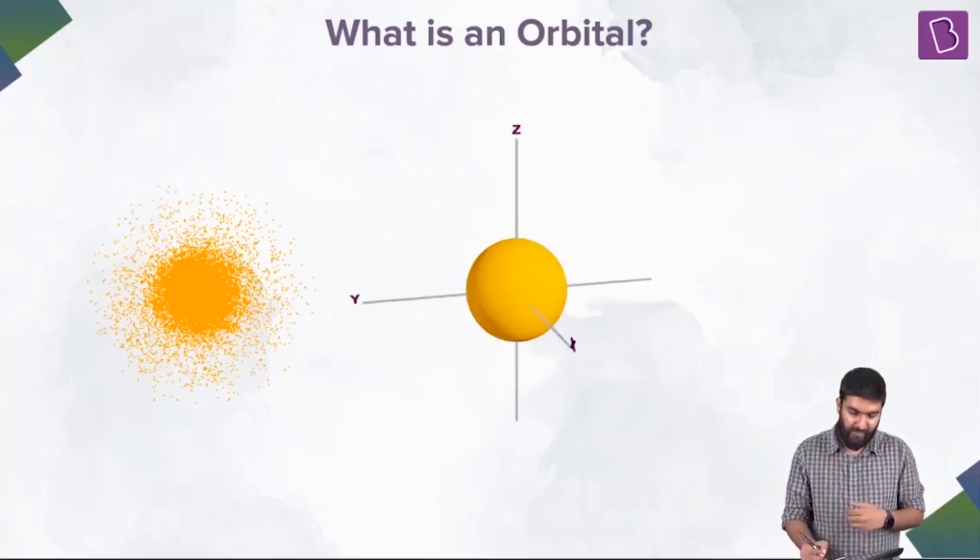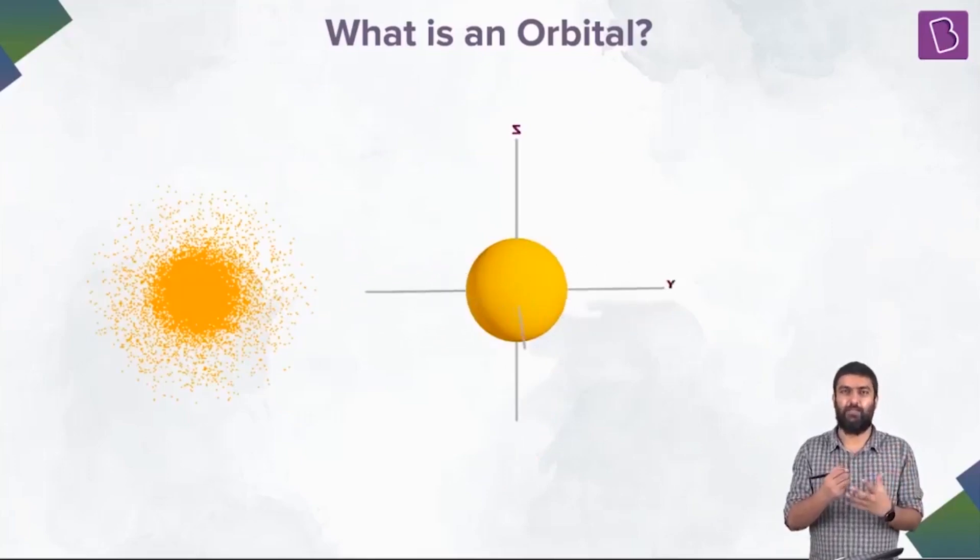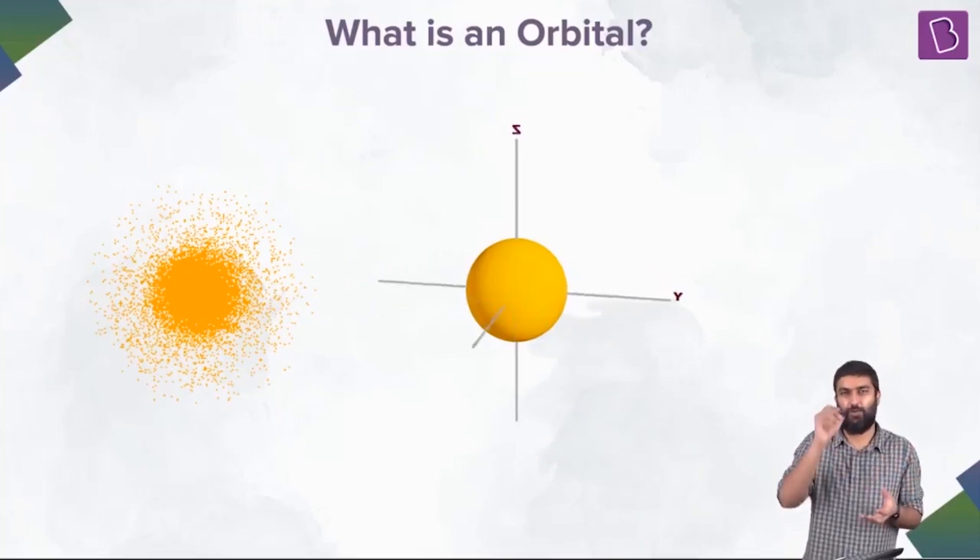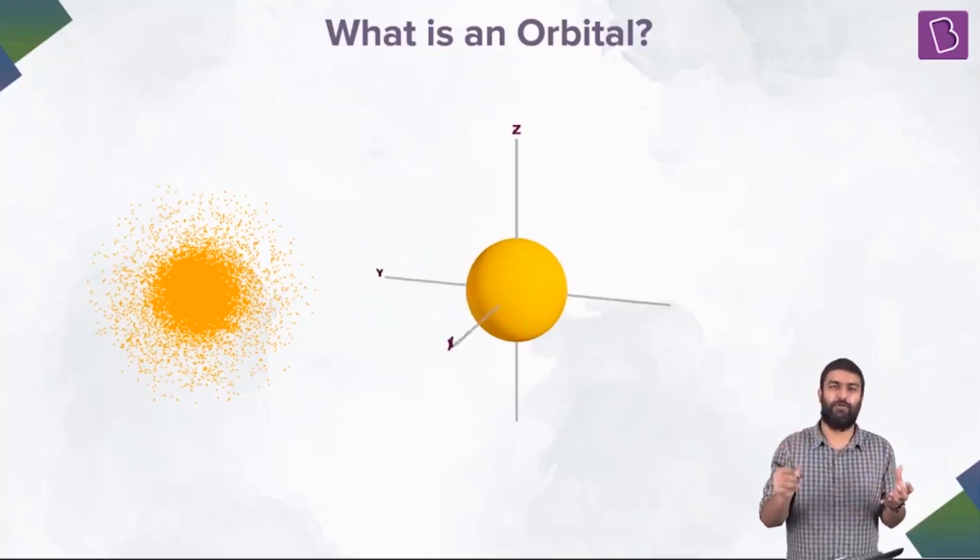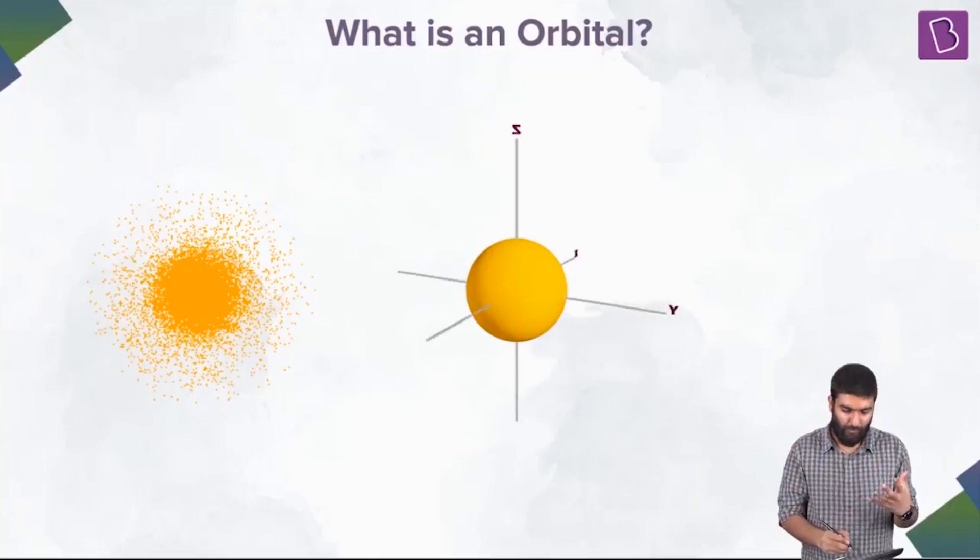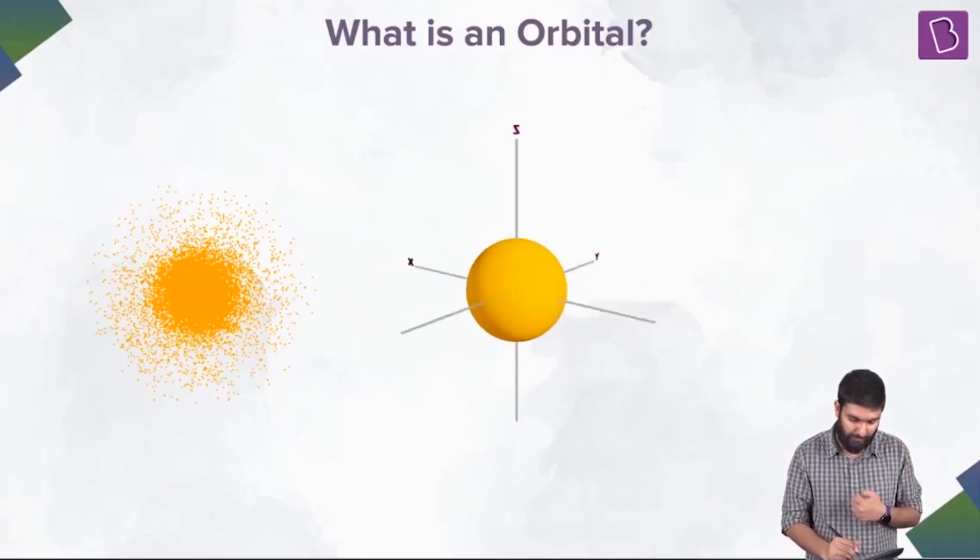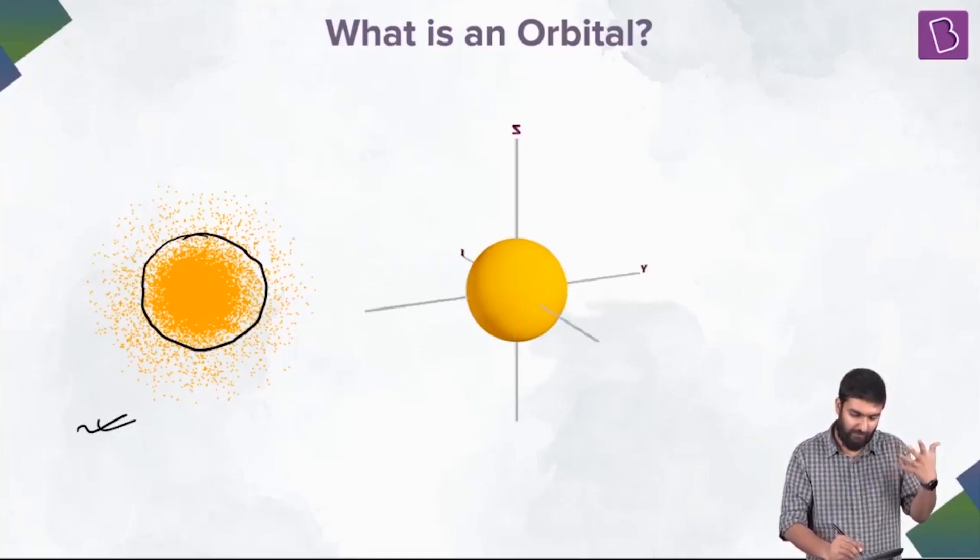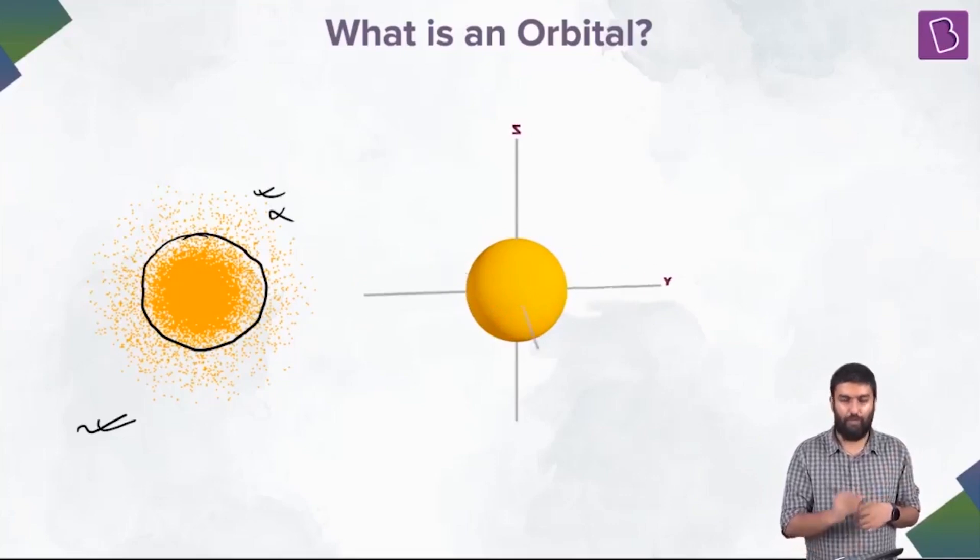So the point is, majority of the times when we draw it out, we don't do this dot, dot, dot, dot, dot. And also, what we can say is that in this plot over here, we can say that I'm considering this region. I'm saying okay, I'm neglecting all the points outside.